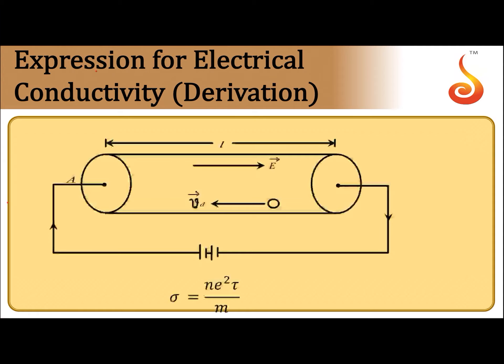Let us consider a conductor with area of cross section A. A potential difference V is applied across this, and due to this there is an electric field E set up in the conductor. Due to the presence of the electric field, electrons move with drift velocity Vd in the direction opposite to the field. Because of this, a steady current I is set up in the conductor. Our intention is to calculate the expression for electrical conductivity of the conductor.